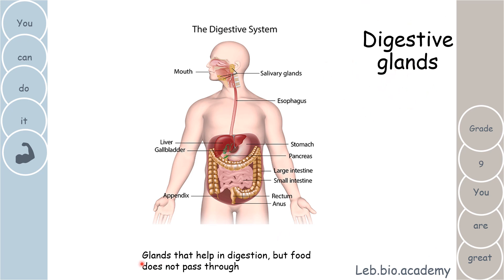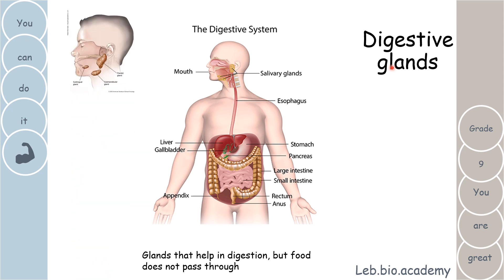However, the second part is called the digestive glands. Glands are organs that secrete certain substances to help in digesting food, but food does not pass through these organs. So the digestive glands are the organs that help in digestion, but food doesn't pass through them. We're going to talk about three main glands in the digestive system.